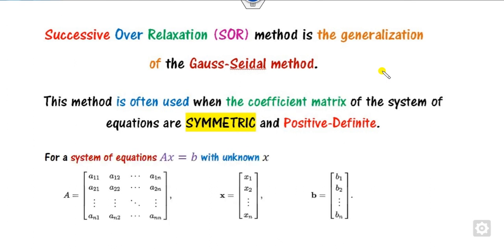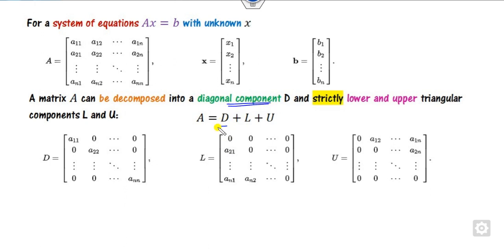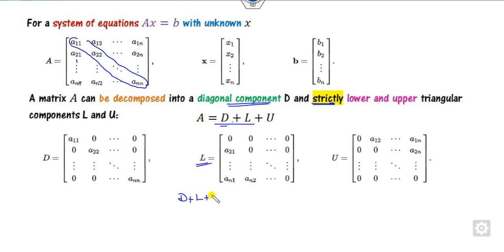For the system AX=B, the SOR method suggests you decompose capital A into three components: the diagonal entries D, the strictly lower triangular part L (where diagonal entries are 0), and the strictly upper triangular part U. Once you substitute this decomposition, A = D + L + U, into AX=B, you get (D + L + U)X = B.